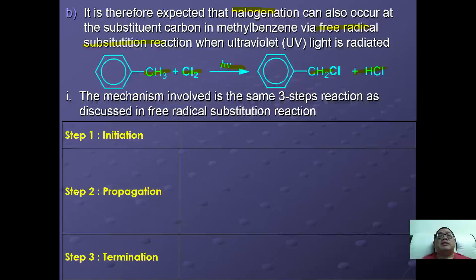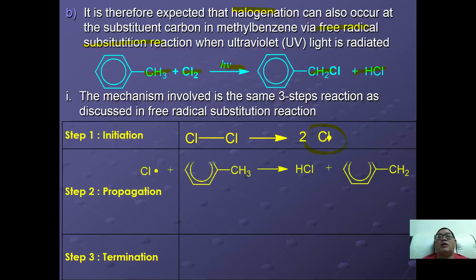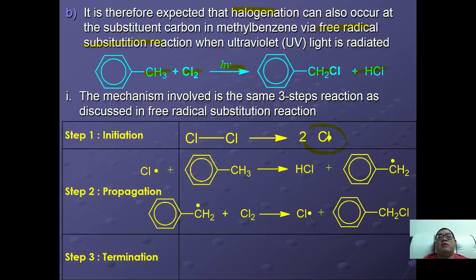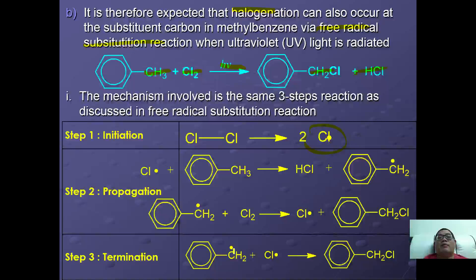The mechanism follows three steps of free radical substitution. In initiation, chlorine undergoes homolytic dissociation to form chlorine radicals. In propagation, the chlorine radical attacks the carbon in the CH3 group to form a benzylic radical, which then reacts with another chlorine molecule to form CH2Cl. In termination, the benzylic radical combines with a chlorine radical to form benzyl chloride.